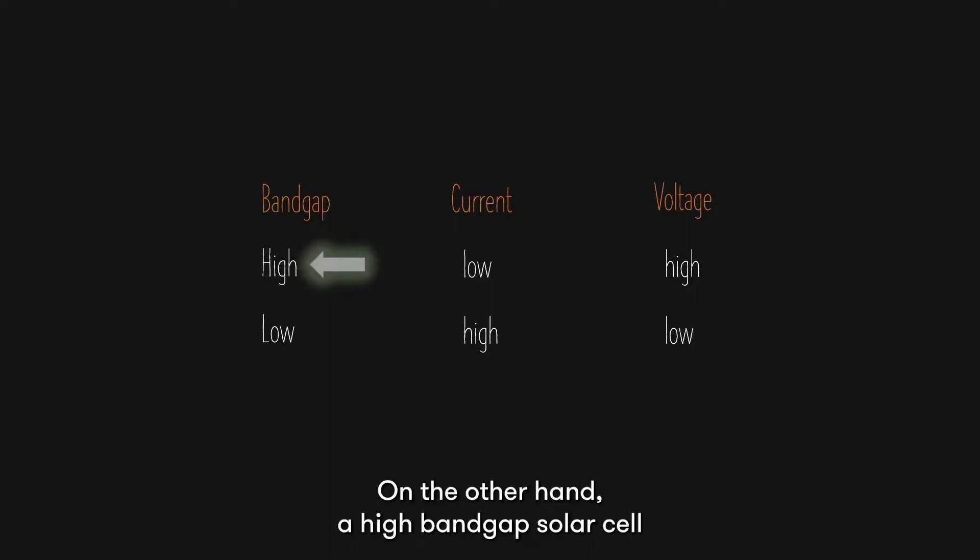On the other hand, a high band gap solar cell provides us with a low current, but with a very high voltage.